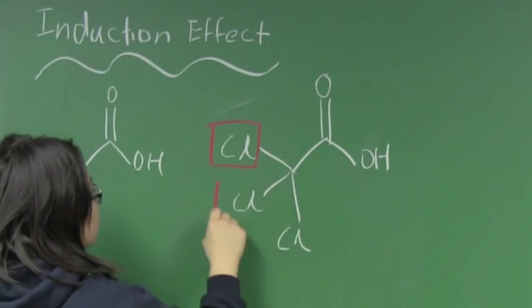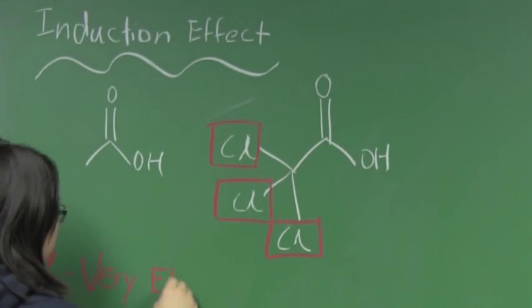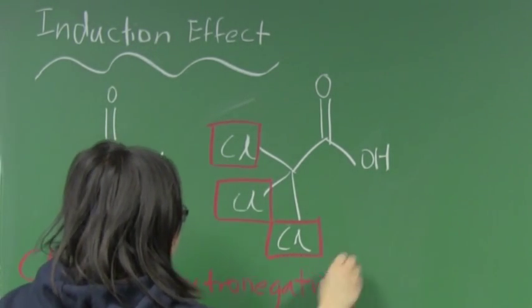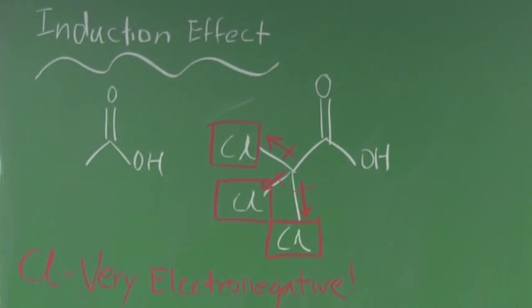The only difference between the two compounds is the presence of chlorine atoms. Since chlorine is very electronegative, it withdraws the electrons from nearby carbon, making the carbon atom more electron deficient. Because of the higher electron deficiency, the structure on the right is more acidic.